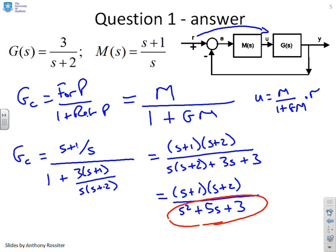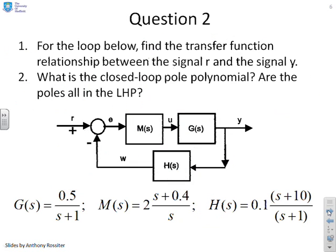Second question: for the loop below, find the transfer function relationship between signal R and signal Y. Again, what is the closed loop pole polynomial? It's asked an extra bit here: are all the poles in the left half plane, because that's important to determine.